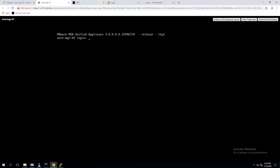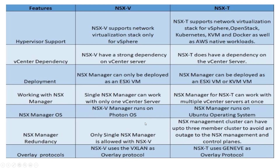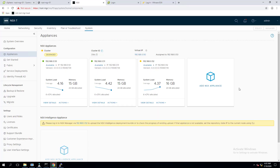For NSX manager redundancy: NSX-V only allows a single NSX manager deployment. In NSX-T, redundancy was added — you can deploy up to three NSX managers and form a cluster. I have deployed three NSX-T managers with IPs .51, .52, and .53.